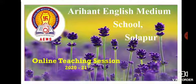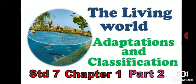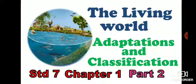Hello students. Welcome to Aryanth English Medium School Swalapur online teaching session. We have started our first lesson of standard 7, subject general science: The Living World - Adaptations and Classification, Part 2. In Part 1 we learned about diversity of plants and animals and the definition of adaptation. Now in this video we are going to see the adaptations in plants and animals.